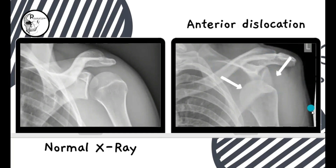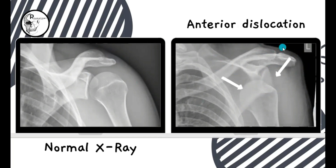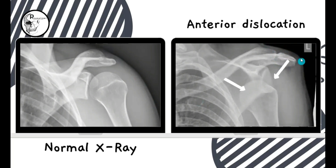You can also make out the difference in the soft tissue outline. There was a noticeable convexity on the normal side, whereas in the dislocation you can see flattening of the curvature just below the acromion process of the scapula — that is the deltoid muscle. This flattening is also a typical sign of shoulder dislocation.